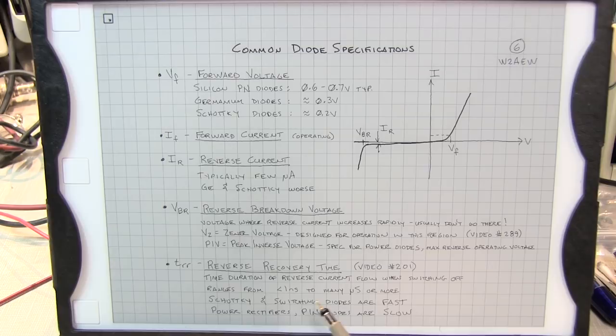And this can range from less than a nanosecond for some of the very fast diodes to many microseconds or even more. Schottky diodes and switching diodes are specifically designed to be very fast and have a very small reverse recovery time. But diodes such as power rectifiers, PIN diodes, and things like that are typically very slow, and they have a lot of stored charge. So the reverse recovery can actually be quite long.